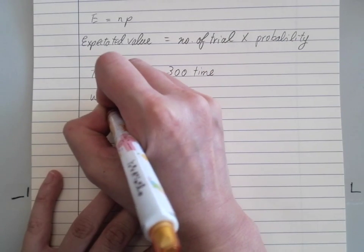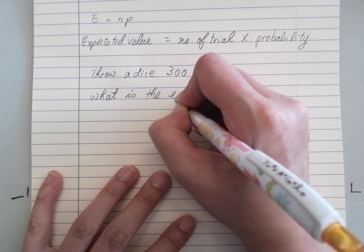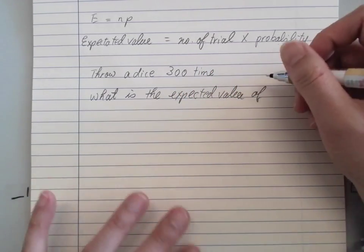What is the expected value of getting a 2?